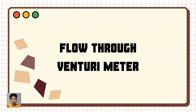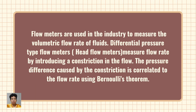Flow-through Venturimeter. Flow meters are used in the industry to measure the volumetric flow rate of fluids. Differential pressure type flow meters measure flow rate by introducing a constriction in the flow. The pressure difference caused by the constriction is correlated with the flow rate using Bernoulli's equation.